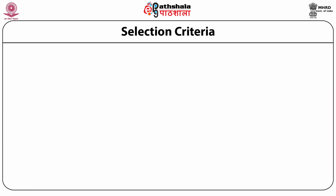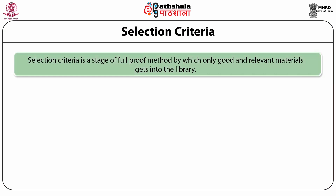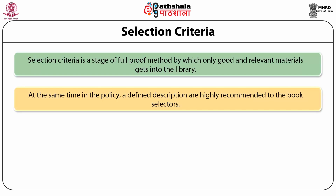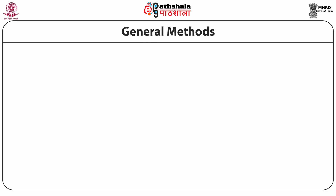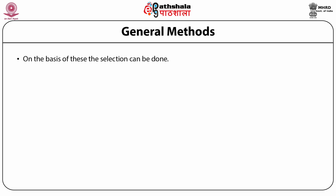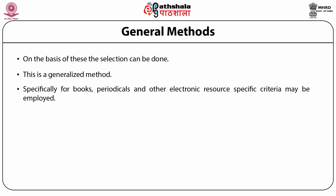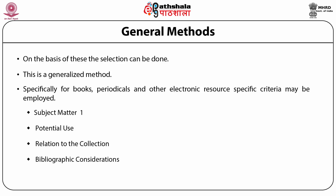Selection criteria is another important aspect — through these criteria only can we build good collections. Selection criteria is a stage of foolproof method by which only good and relevant materials get into the library. The policy should have defined descriptions highly recommended to book selectors. General selection criteria for books, periodicals, and electronic resources includes: first, subject matter; second, potential use; third, relation to the collection; fourth, bibliographic consideration; and fifth, the cost.